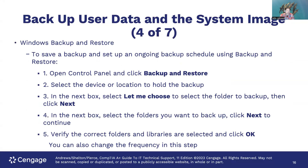Windows Backup and Restore is the other option for saving a backup and setting up an ongoing backup schedule. Open the Control Panel and click on Backup and Restore. Select the device or location to back up to, then in the next box check 'Let me choose' to select the folder to back up. Select the folders you want, click Next, verify your selections, click OK, and you can also manage the backup frequency in this step.